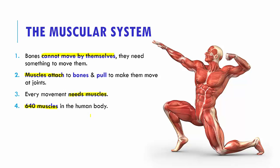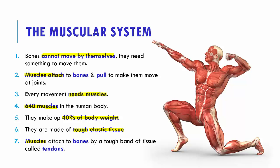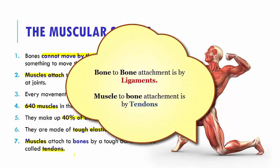We have 640 muscles in our body. Because there are so many muscles, they make up nearly 40% of our body weight. These muscles are made up of tough elastic tissue and are attached to bones by tough bands called tendons. A quick memory note: bones attach to bones with the help of ligaments, whereas muscles attach to bones with the help of tendons. Bone to bone is ligament; muscle to bone is tendons.